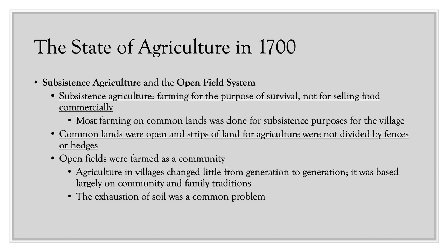Open fields were farmed as a community, with agriculture in villages changing little from generation to generation, based largely on community and family traditions. One major problem was soil exhaustion — soil deprived of nutrients becomes like dead dirt and cannot grow anything. The open field system addressed this by rotating fields and letting one lie fallow, allowing soil to replenish, but the downside was that it limited the amount of food that could be produced.